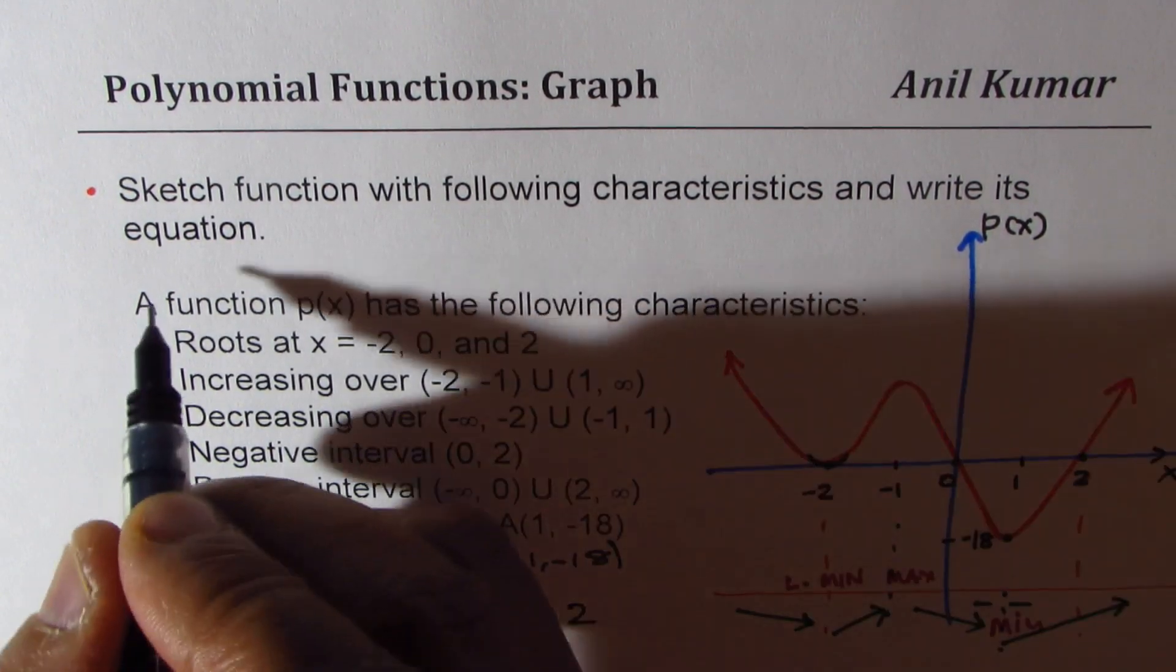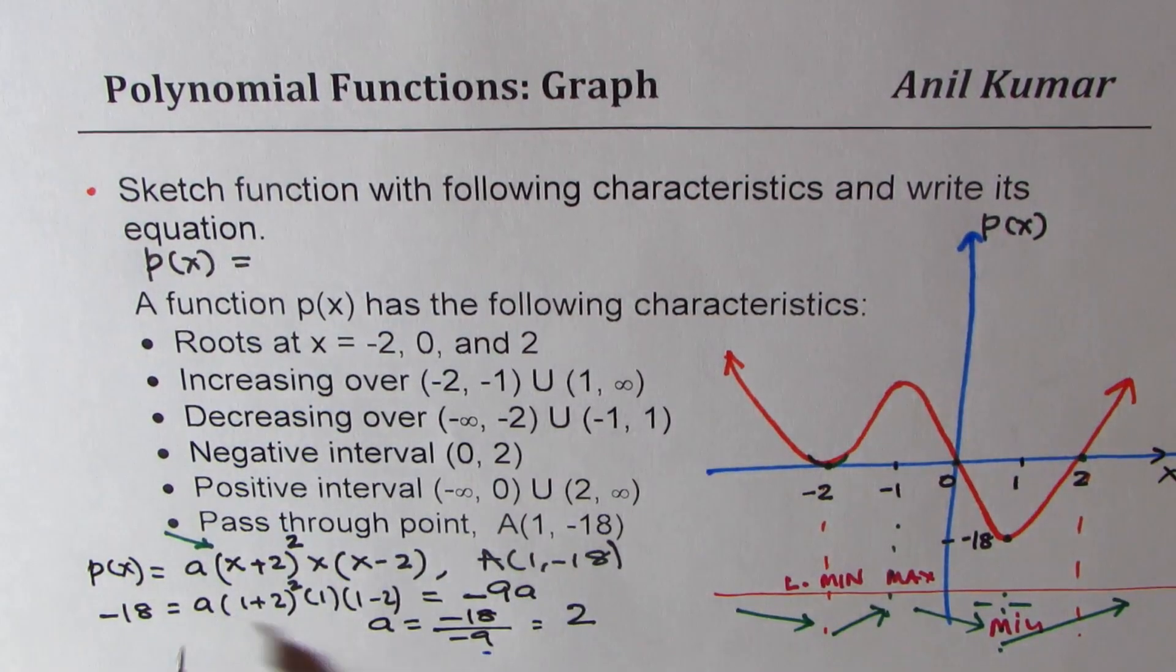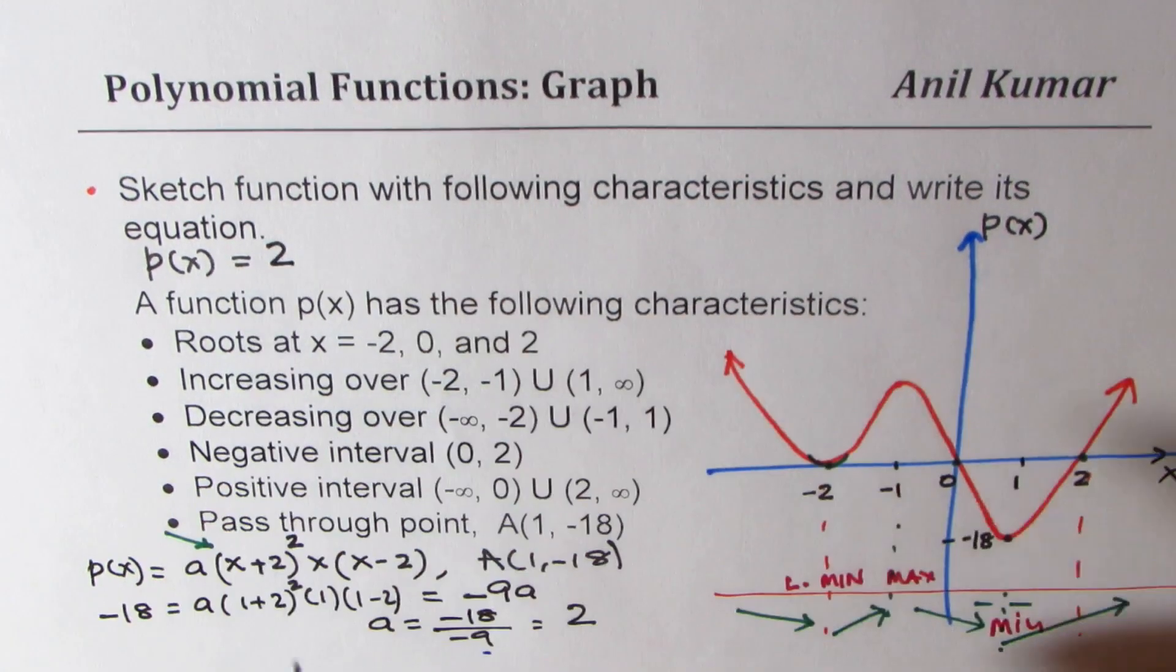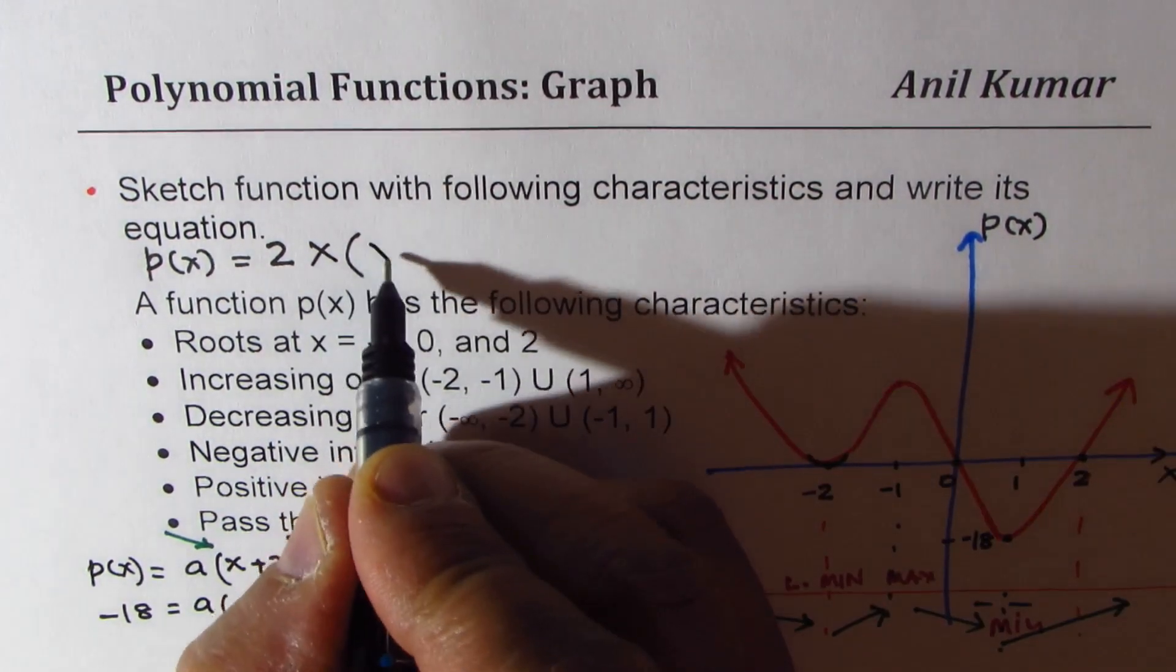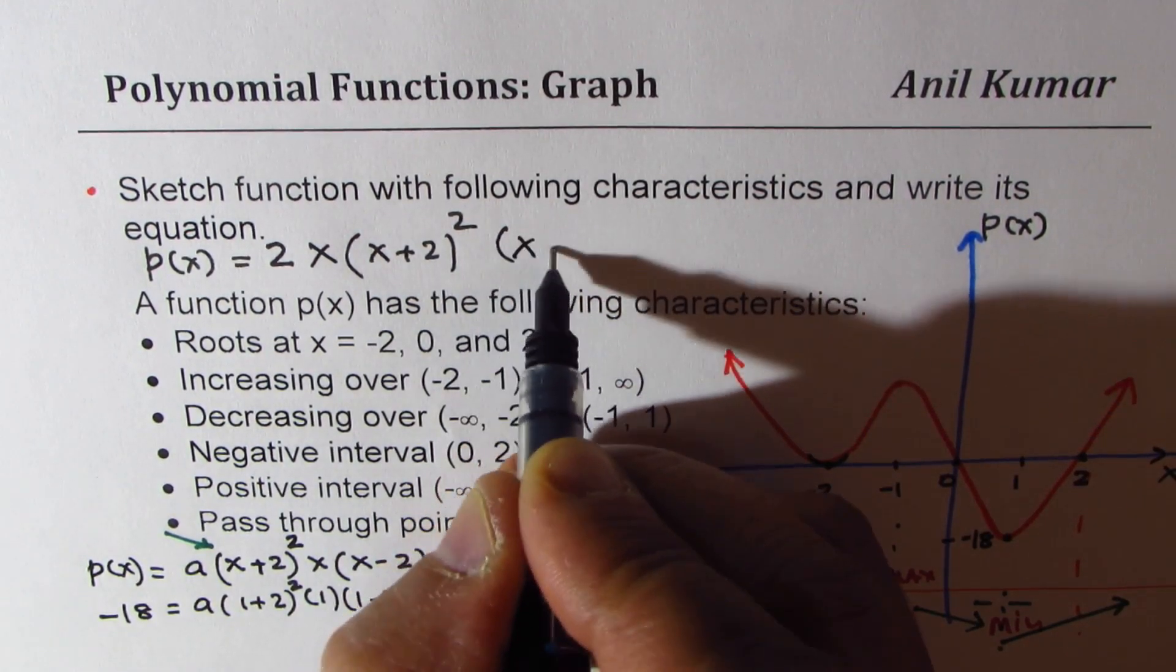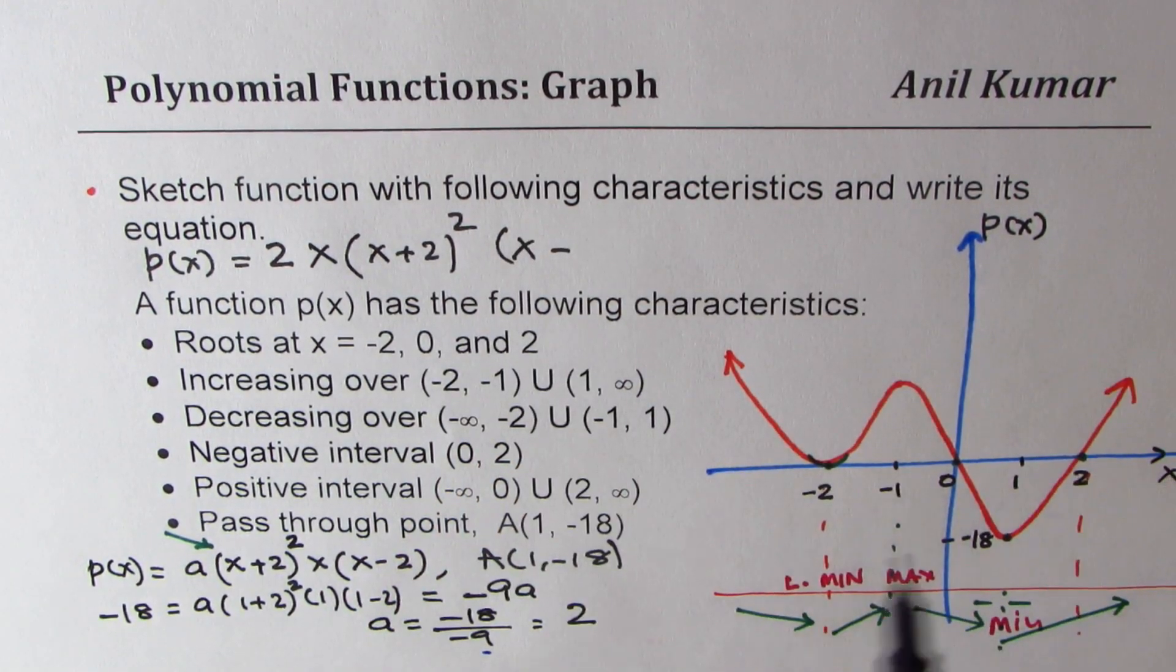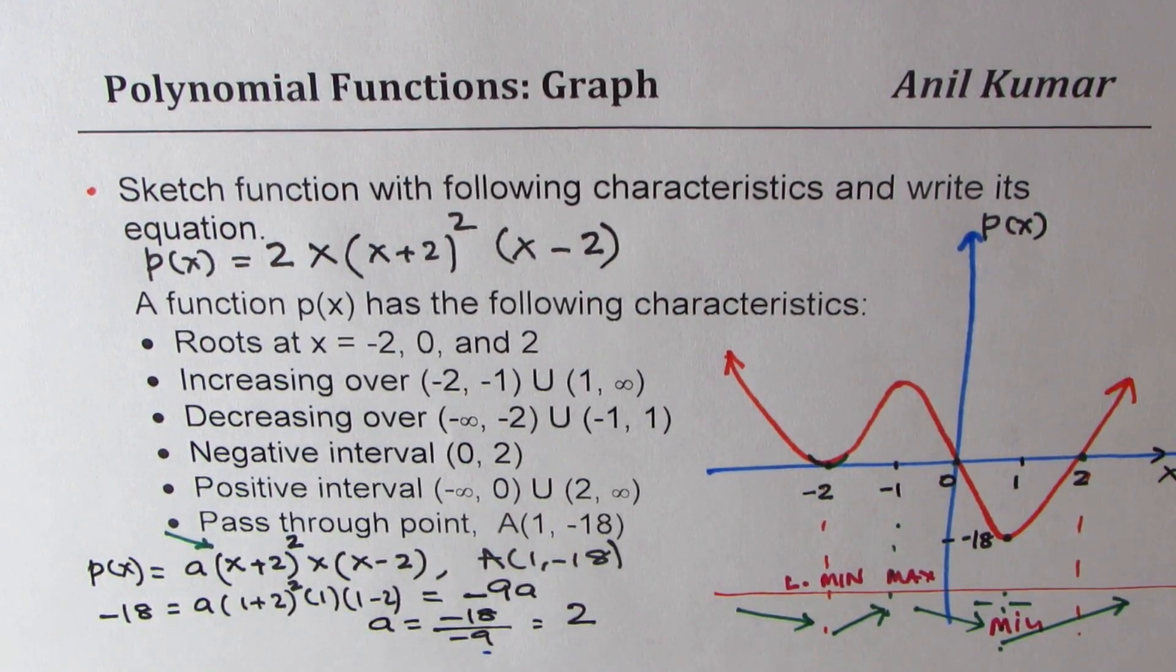So we get our function. The polynomial p(x) will be: a is 2, so 2 times x times (x + 2) squared—that is the turning point—times (x - 2), a linear zero. So we have two linear zeros and one quadratic zero in this particular case. So that becomes our function.